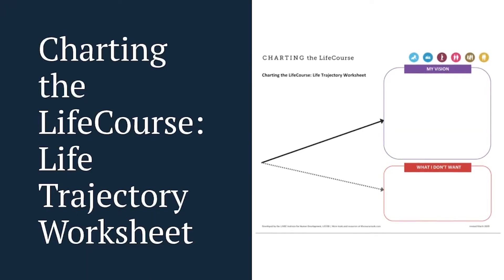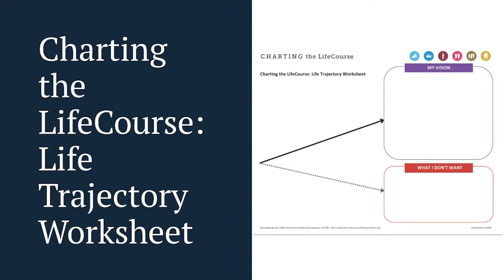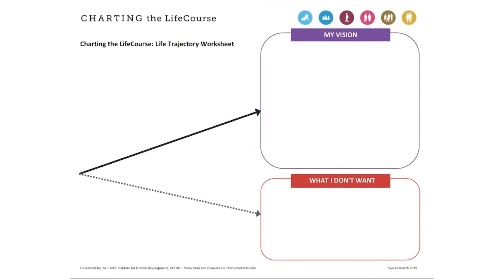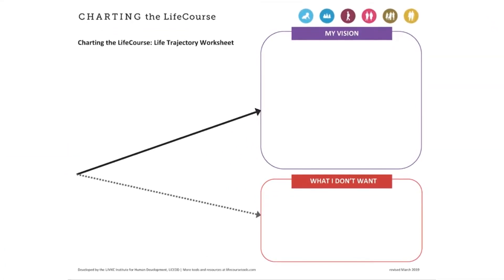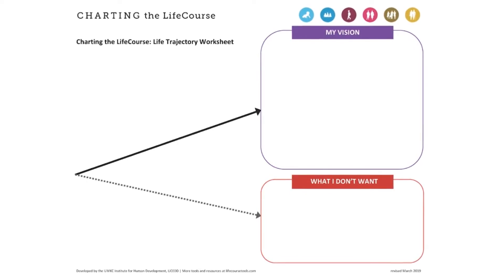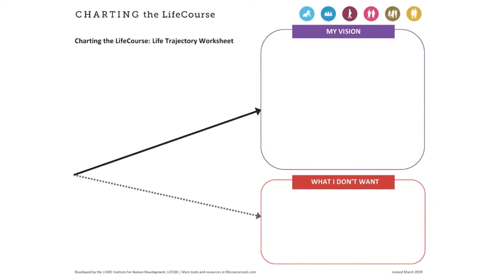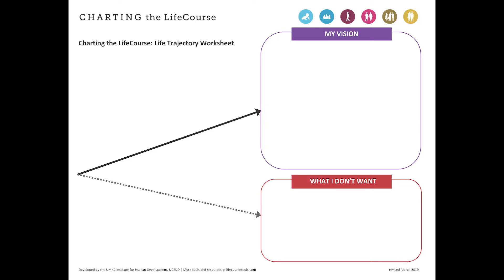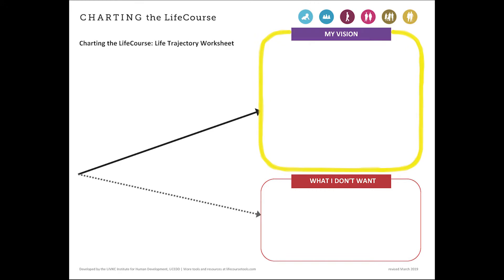This video explains how to use the Charting the Life Course Life Trajectory Worksheet. The Life Trajectory Worksheet facilitates an open conversation about what makes a good life for an individual with a disability. It helps create a picture and a long-term vision about how an individual can achieve her idea of a good life, and also provides an opportunity to discuss what she does not want in her life and what experiences may negatively influence the trajectory to the good life.